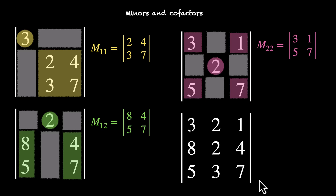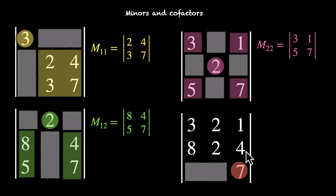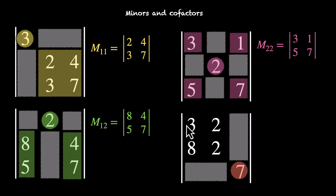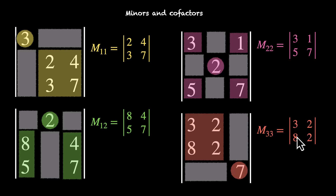Let's take one last example. What's the minor for this element? Ignoring 5, 3, 1, and 4, we are left with this 2x2. The determinant of this one is going to be our M33. So M33 is going to be the determinant of 3, 2, 8, and 2.